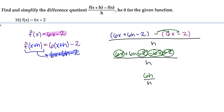And our h cancels out, leaving us with just 6. So when we find and simplify the difference quotient for this function, we get 6.